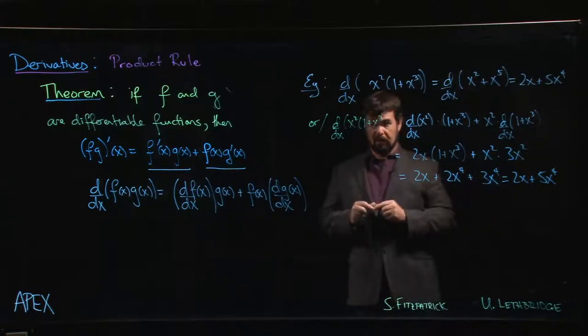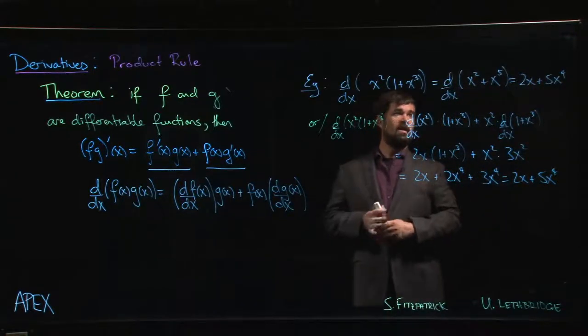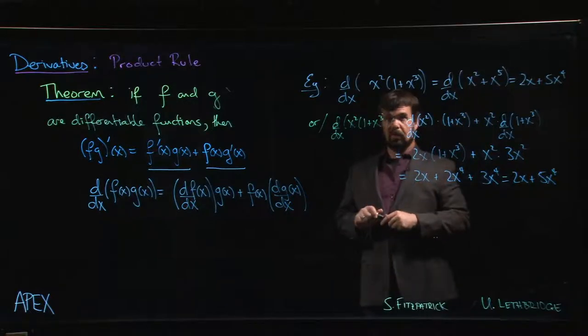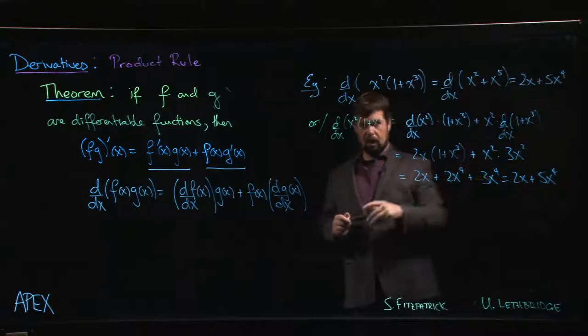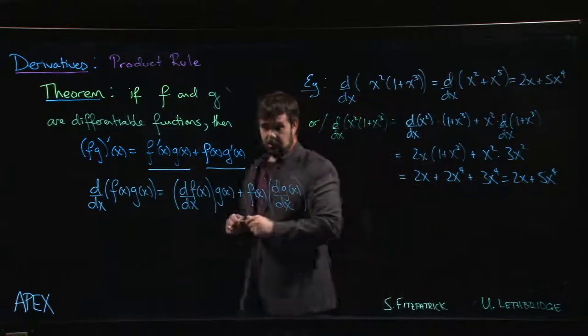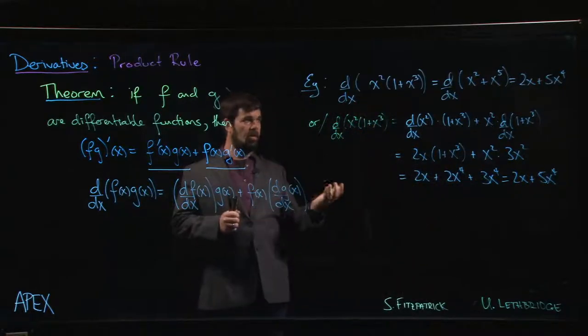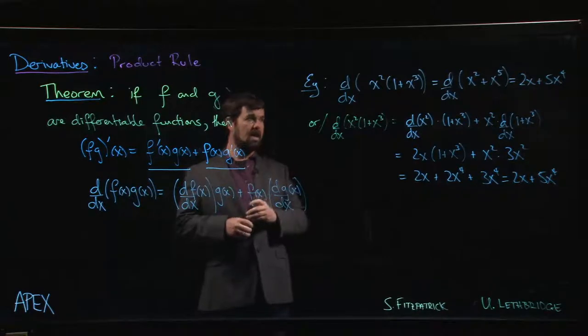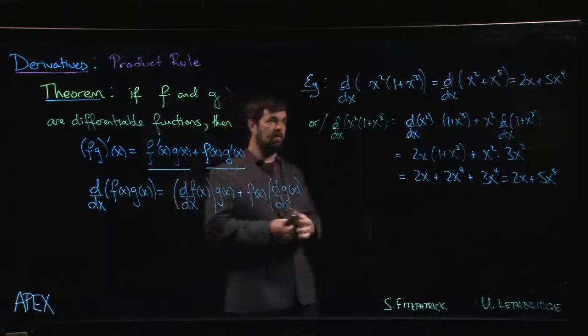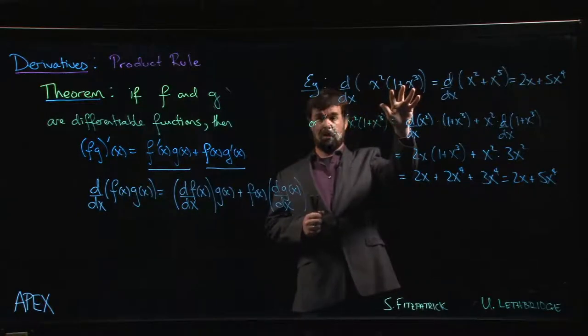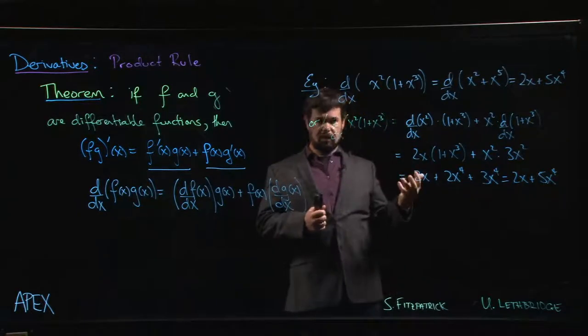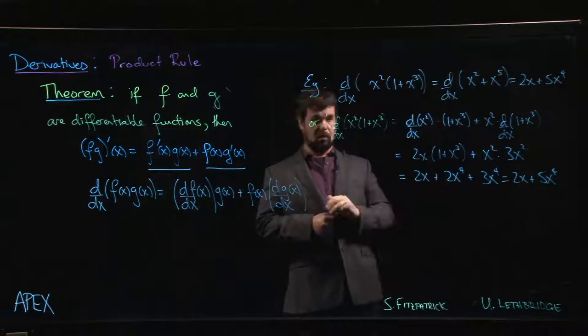For a problem like this, you could reasonably object that we had a lot less work to do by simply multiplying through and taking the derivative term by term than using the product rule, and that would be a fair objection. Of course, if the product were a little bit more complicated—maybe this is a binomial as well, or maybe this one has three terms in it—there's going to be a point where it might be less work to use the product rule.